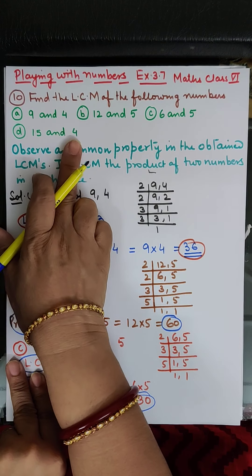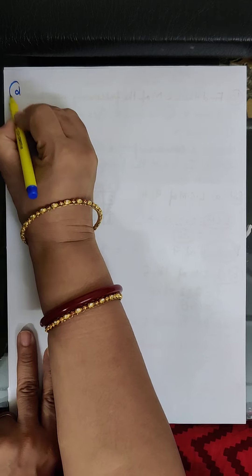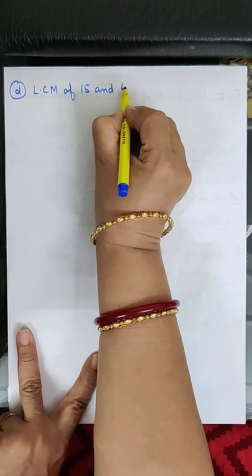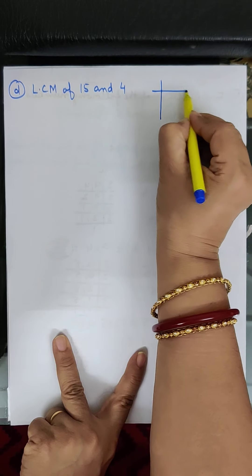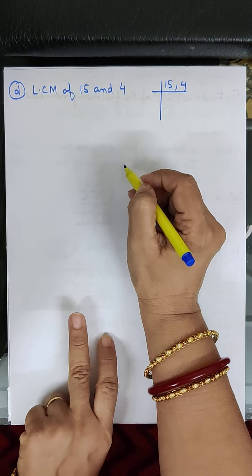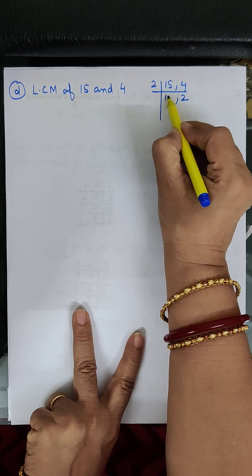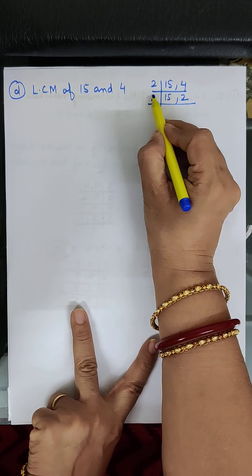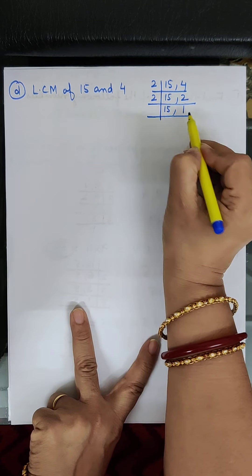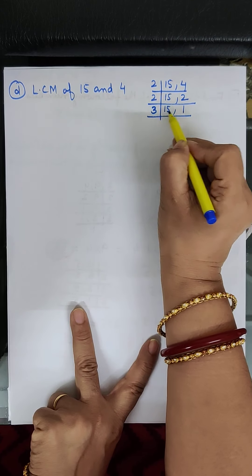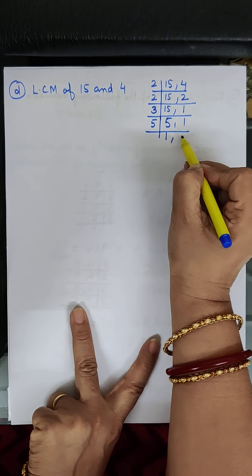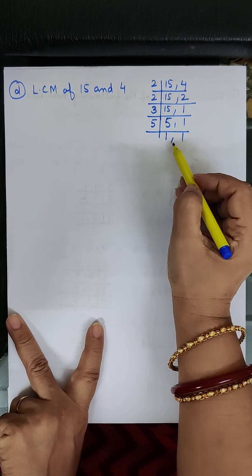Part D: LCM of 15 and 4. We take out the LCM of fifteen and four. Dividing by 2: two twos are four, fifteen as it is; again two ones are two, fifteen as it is. Next prime number is 3: three fives are fifteen, here one. Next we take 5: five ones are five and one.